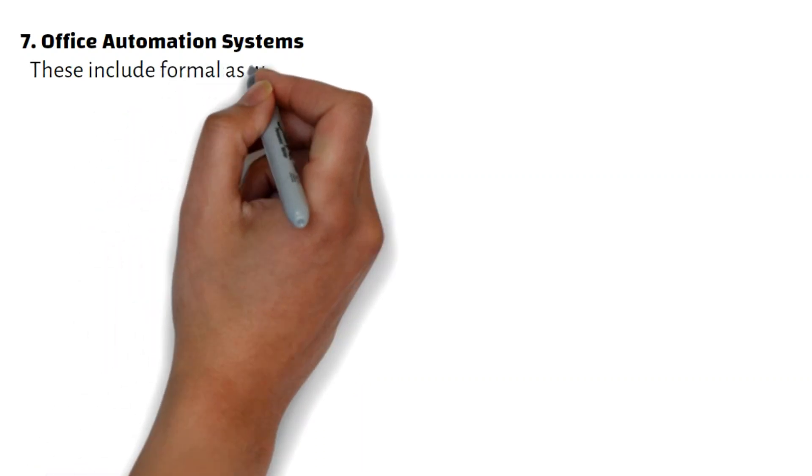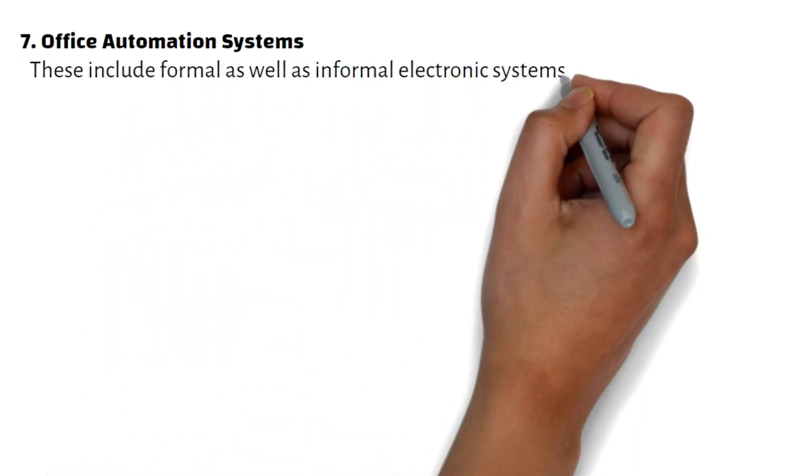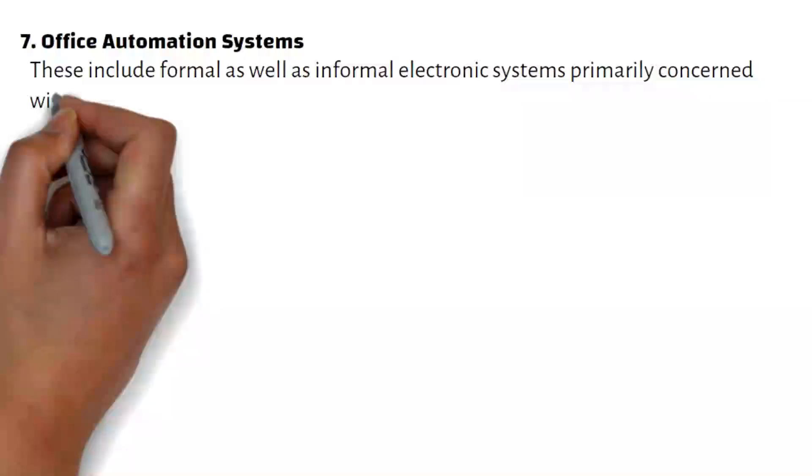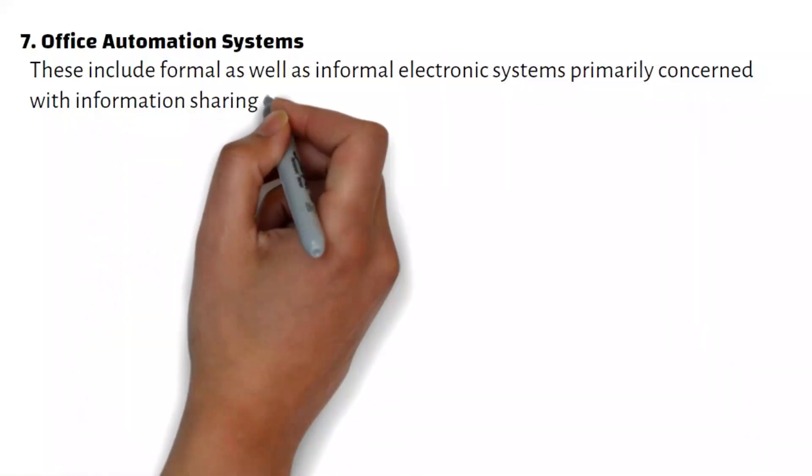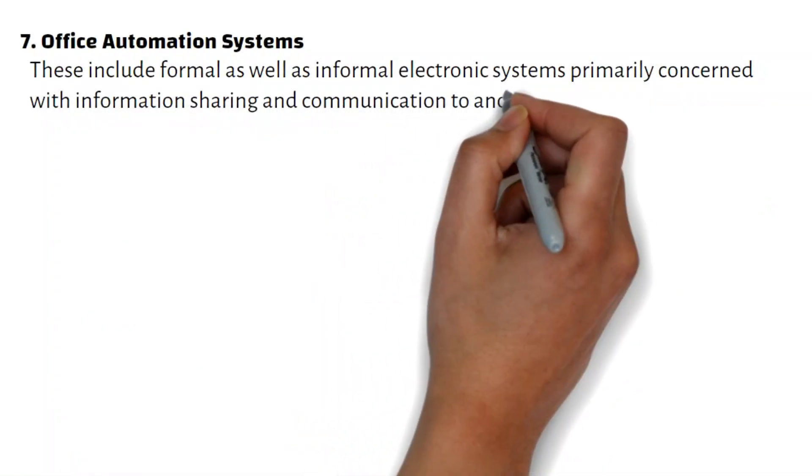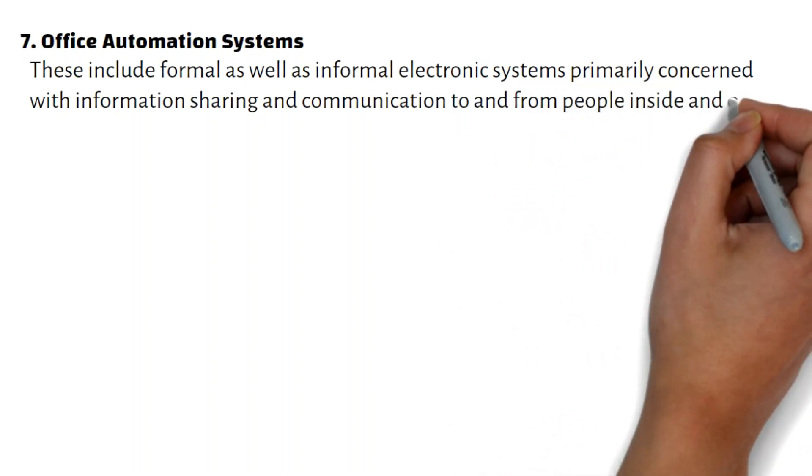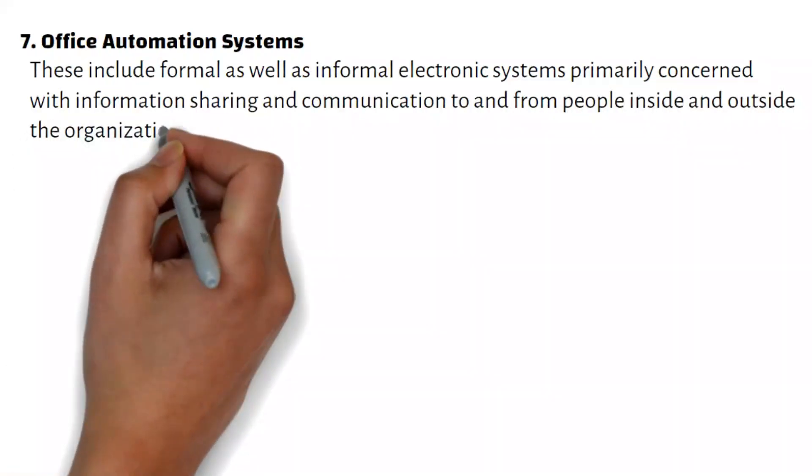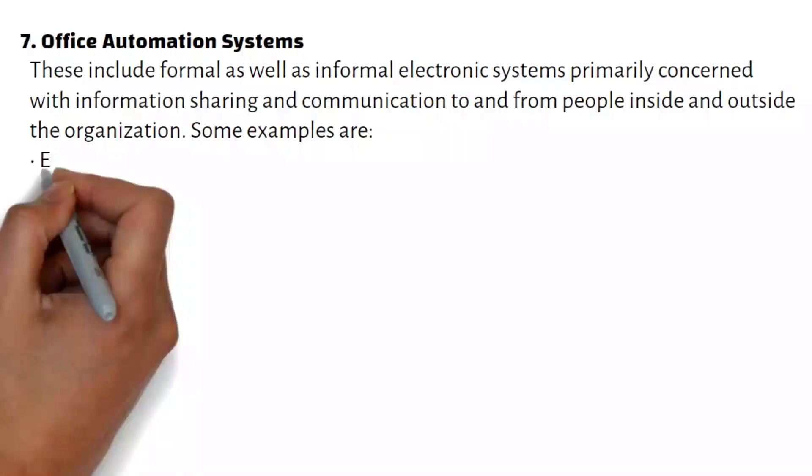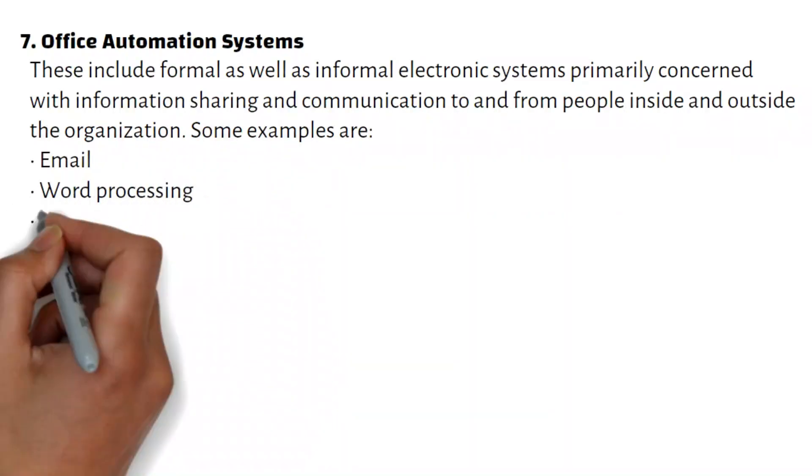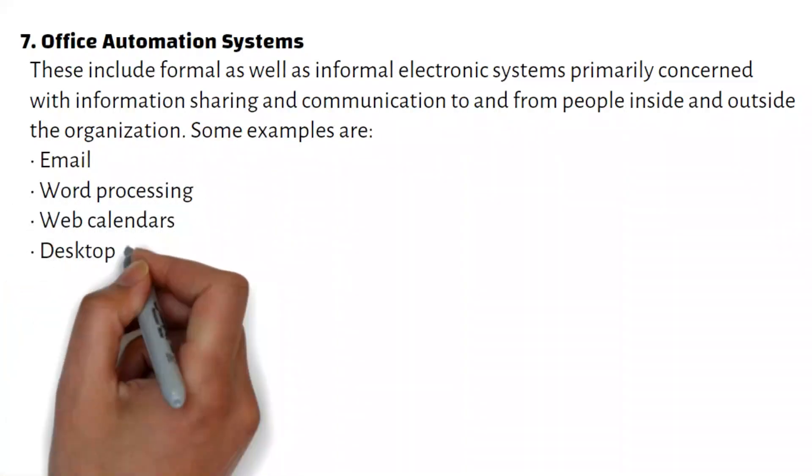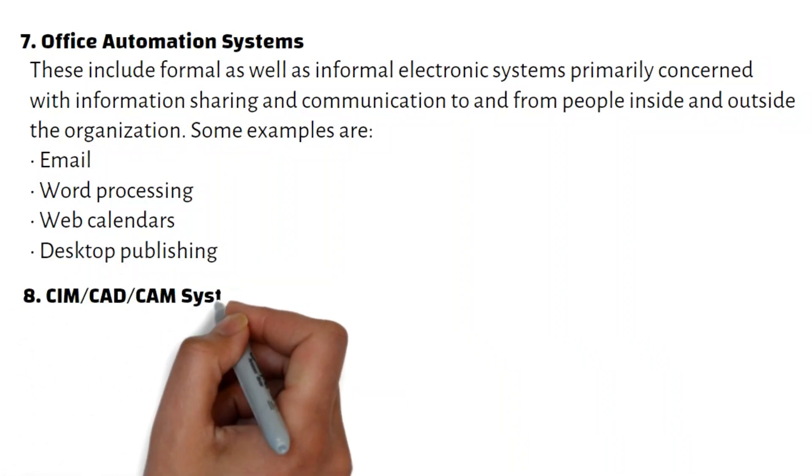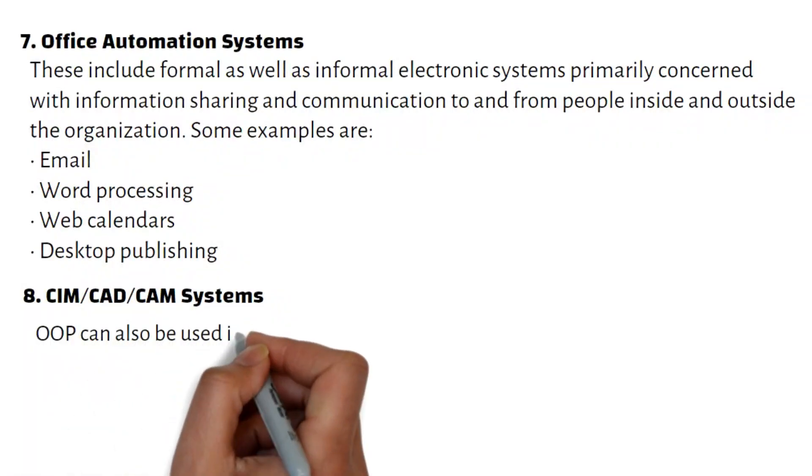Office Automation Systems include formal as well as informal electronic systems, primarily concerned with information sharing and communication to and from people inside and outside the organization. Some examples are email, word processing, web calendars, and desktop publishing.